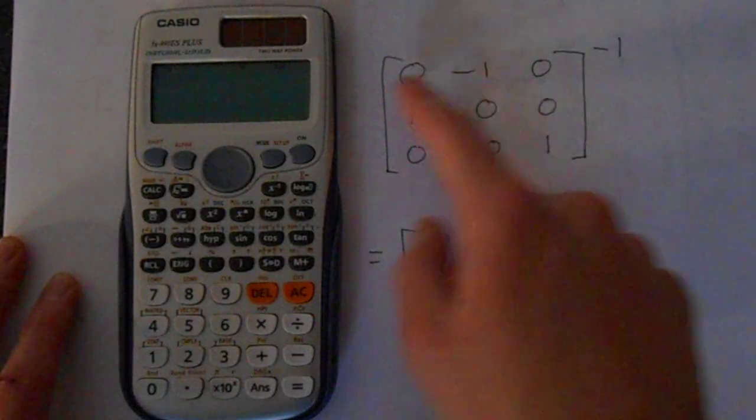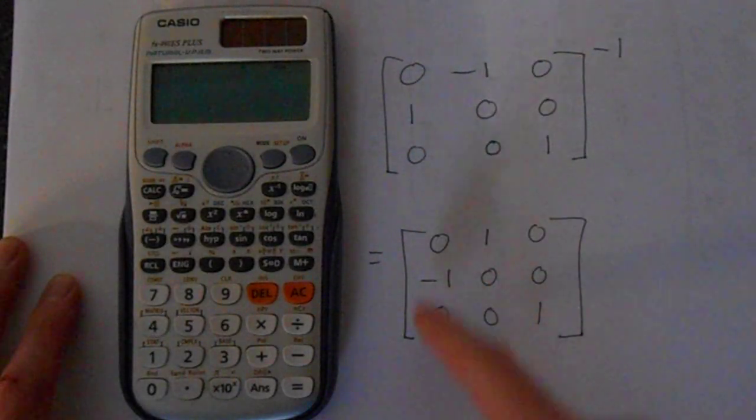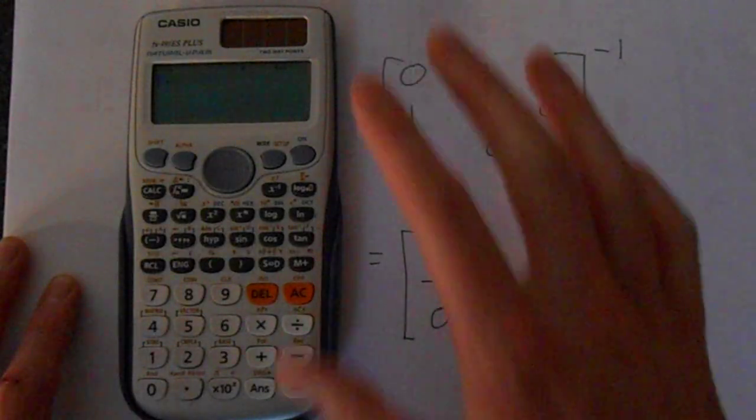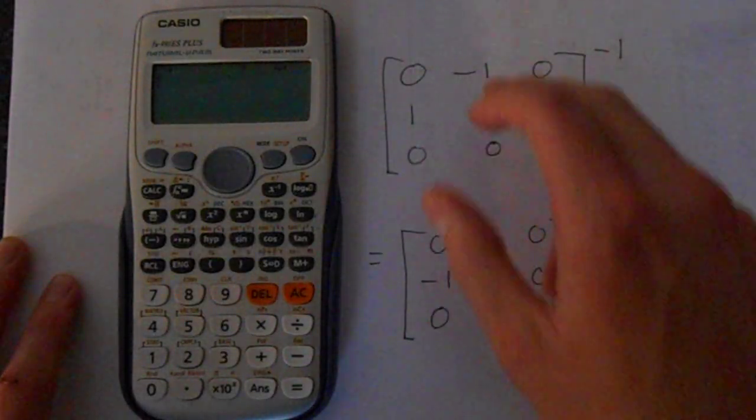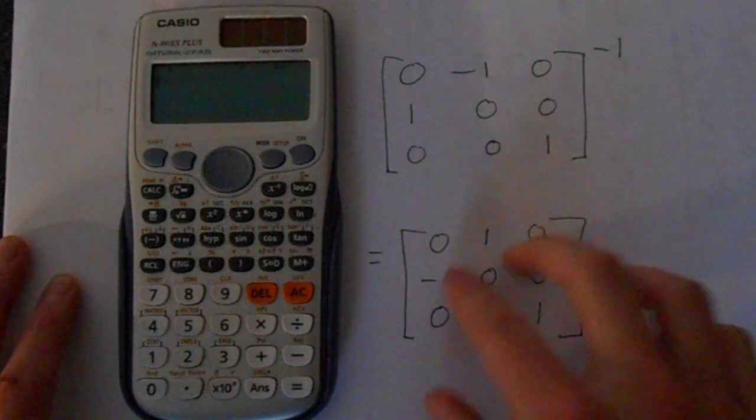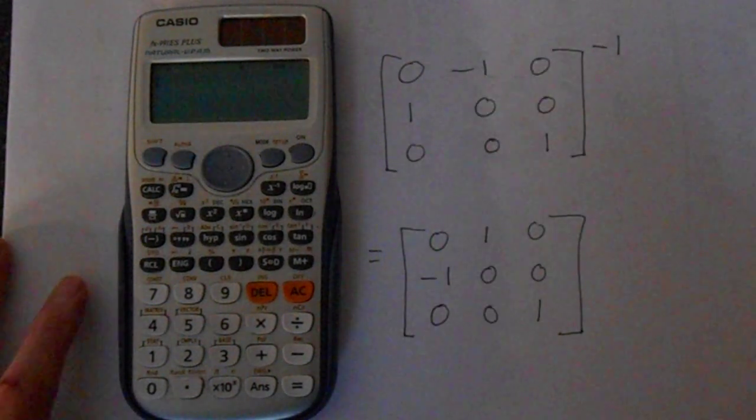So you'll notice here, if you take the transpose, this row becomes a column, this row becomes that column, and this row becomes that column. So we can see this, take this matrix, find its transpose, and that should be the inverse because this matrix is orthogonal.